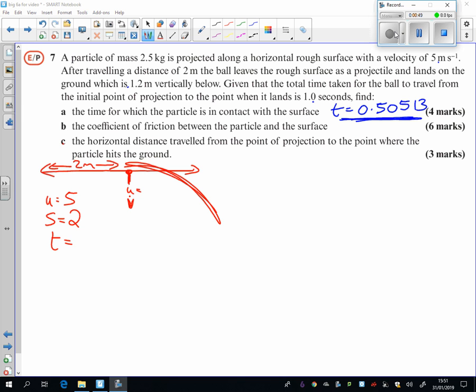We knew the time taken for that bit there was 0.505. We even knew what the acceleration was there. It was minus 4.1201, wasn't it? Let's use V equals U plus AT, shall we? That's probably the nicest one.